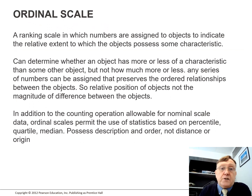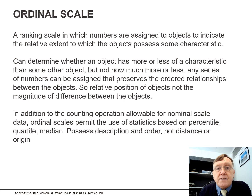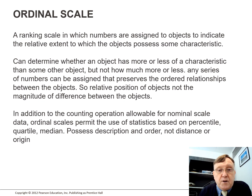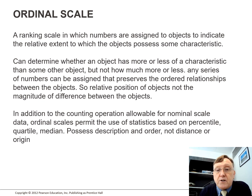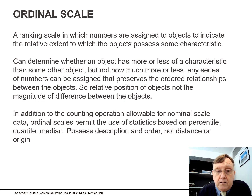The ordinal scale is a ranking scale in which numbers are assigned to objects to indicate the relative extent to which the object possesses some characteristic. It can determine whether an object has more or less of a characteristic than another object, but not how much more or less. Any series of numbers can be assigned that preserves the ordered relationships between objects. Ordinal scales permit the use of statistics based on percentile, quartile, or median. They possess description and order, but not distance or origin.